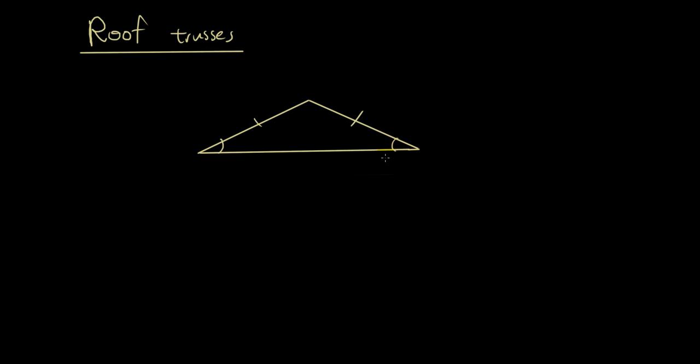The different sections of roof trusses: we call the timber section down the middle the king post, and then we call this section the rafter, and we also call this section the tie beam.